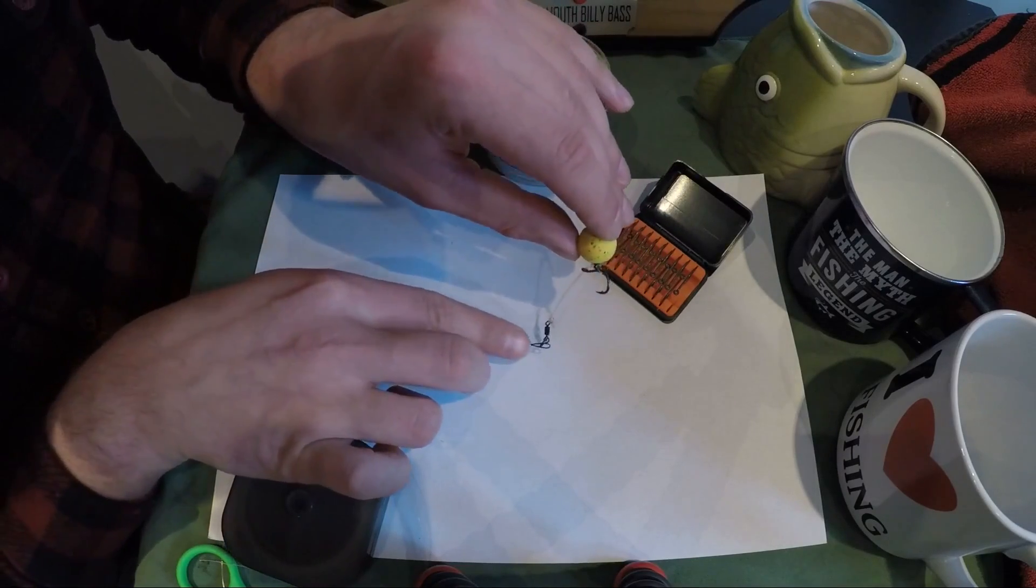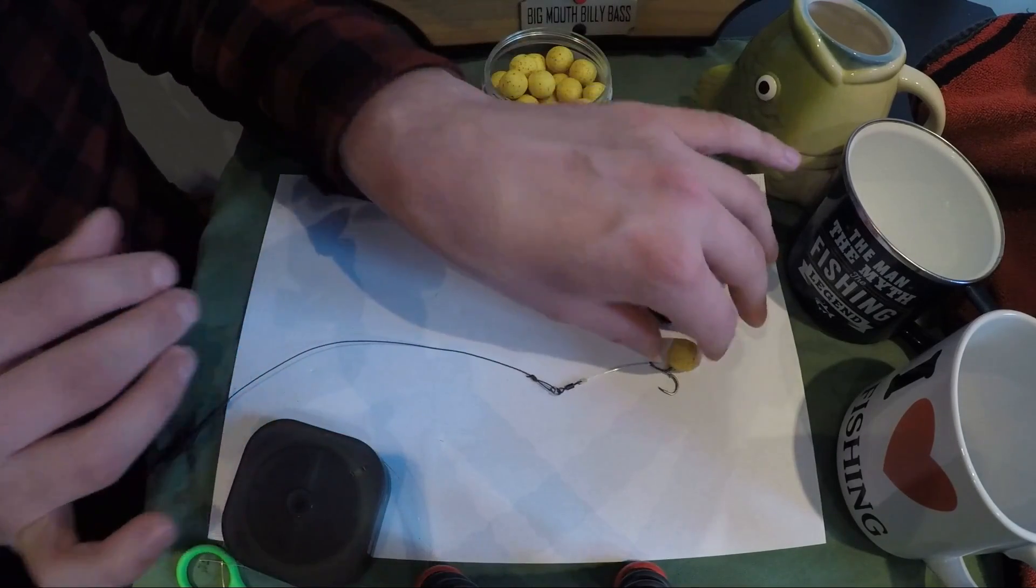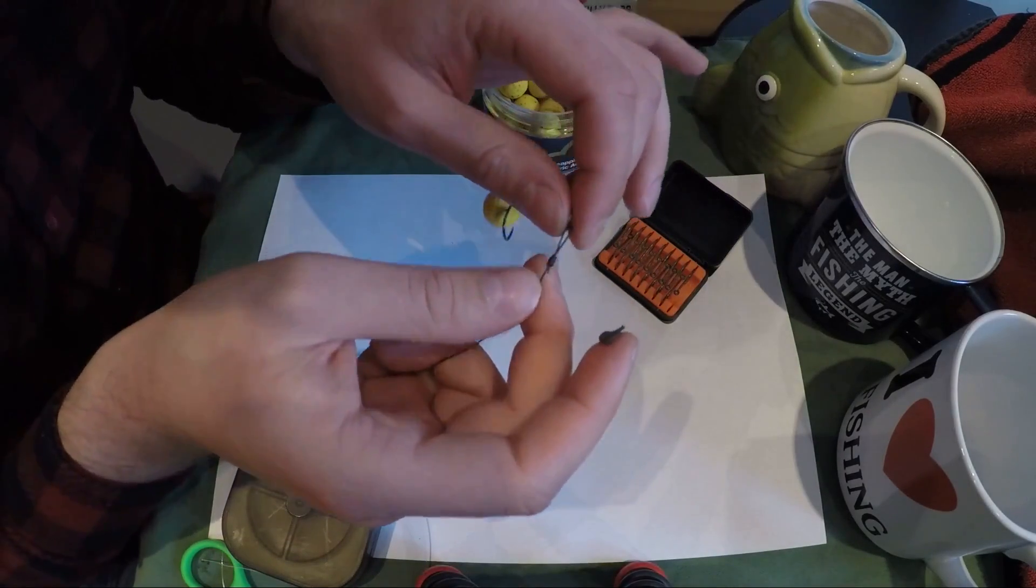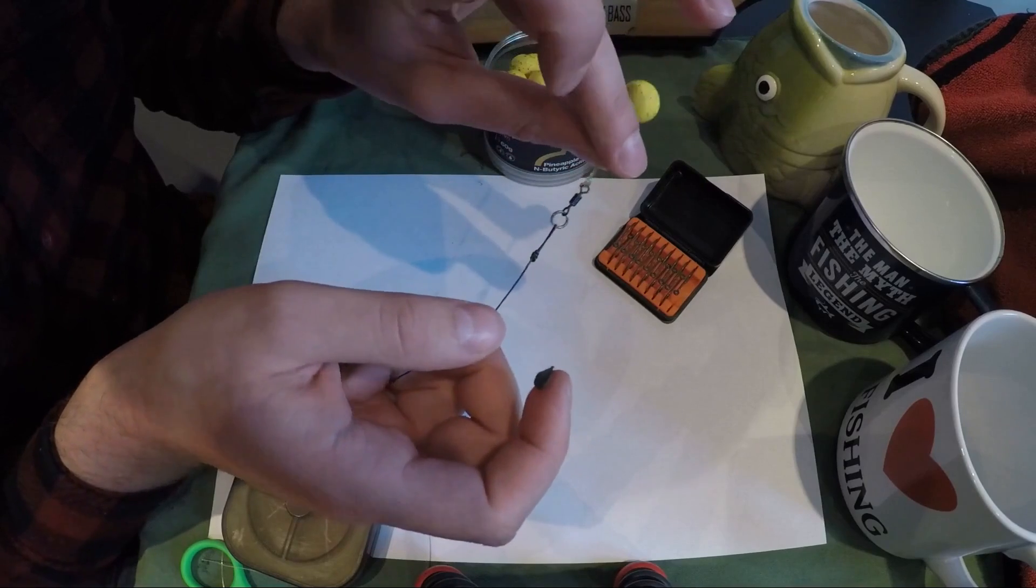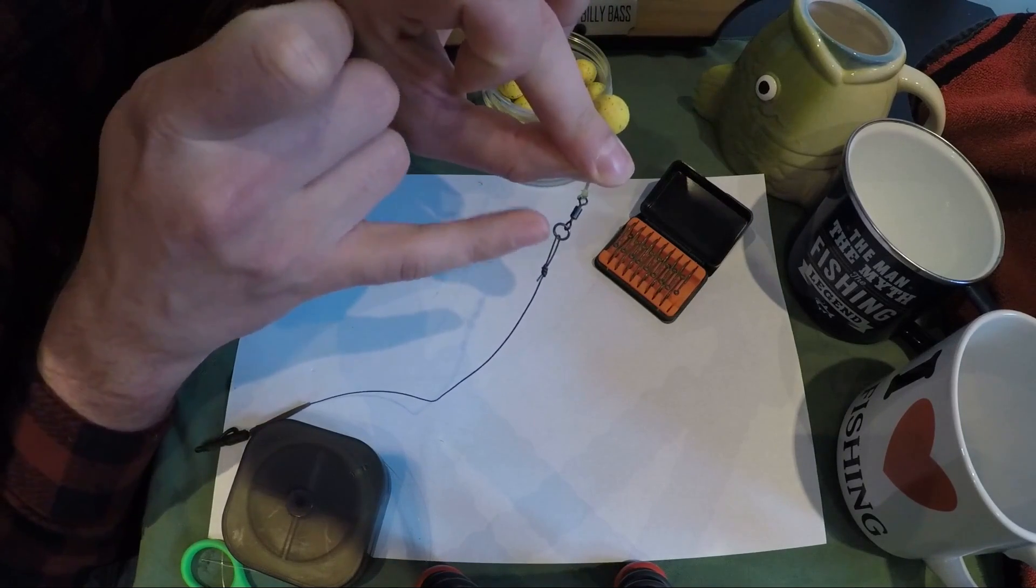But we need something to counterbalance it. We need a little bit of putty here. Take our tungsten rig putty—that seems to divide the angling world—and where to put the putty. Some put it up on the top eye of a swivel here, some will put it around the bottom of the ring.